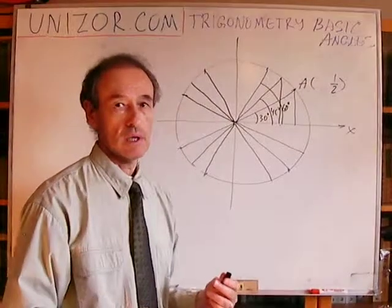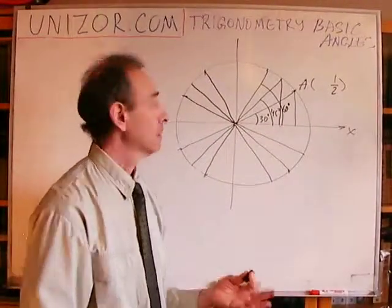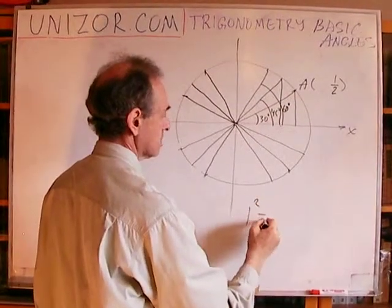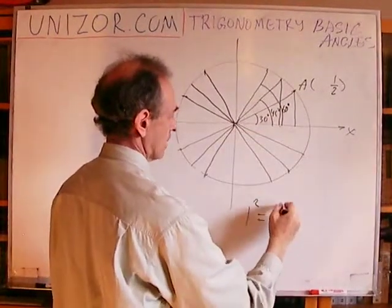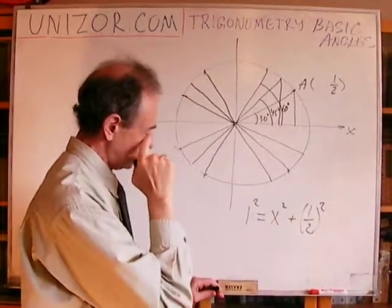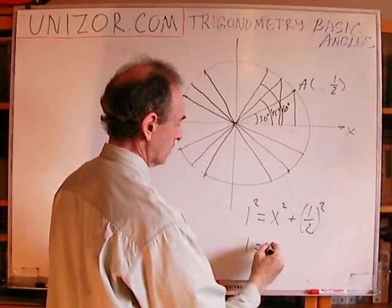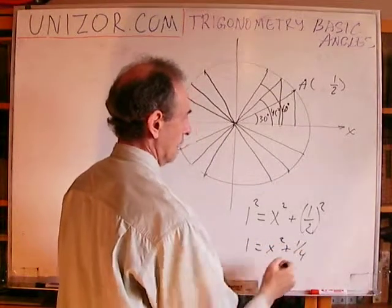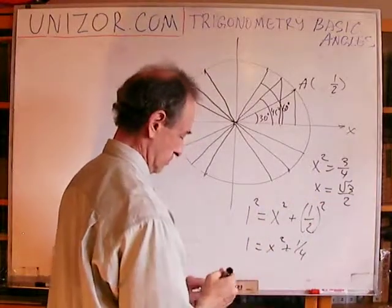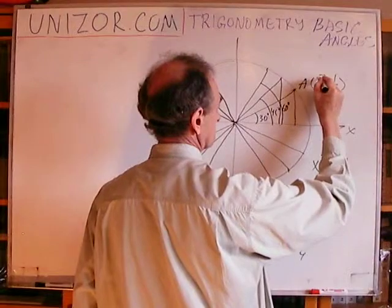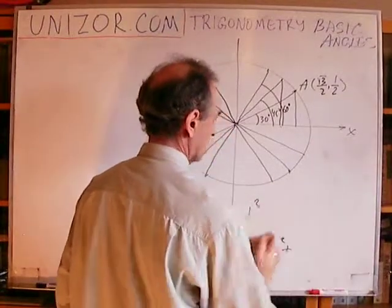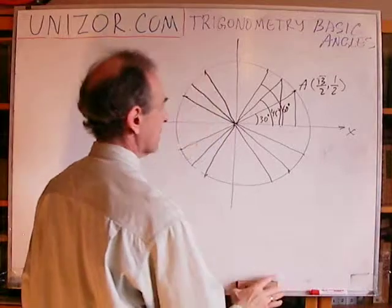What is the other catheter, which is the abscissa of point A? By the Pythagorean theorem: 1² = x² + (1/2)². So 1 = x² + 1/4, which gives x² = 3/4, and x = √3/2. So the coordinates of point A when it represents the angle of 30 degrees are (√3/2, 1/2).